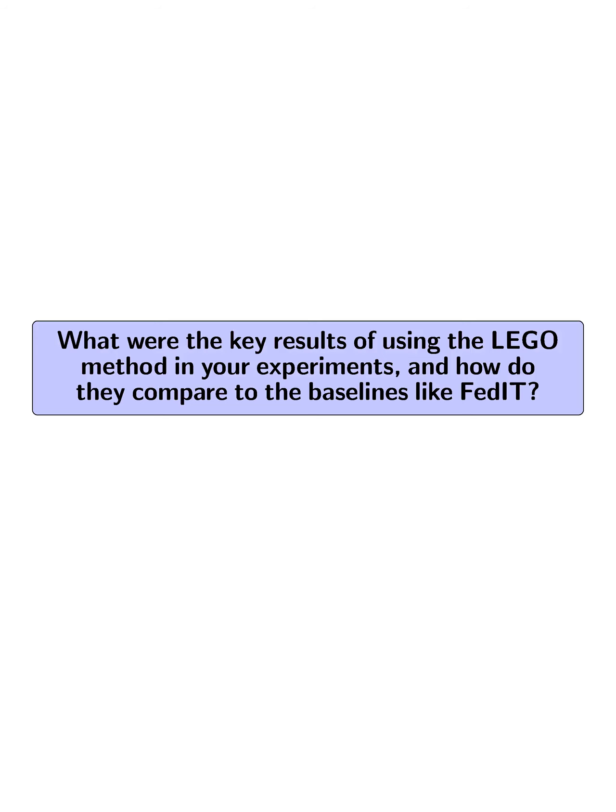What were the key results of using the LEGO method in your experiments, and how do they compare to the baselines like FETIT? The key results demonstrated significant improvements in both fine-tuning and inference speed, achieving up to 1.6x speed-up in inference and 1.4x in fine-tuning compared to 0% sparsity LLMs. LEGO outperformed the FETIT baseline in scenarios with task-dependent non-IID data, achieving an accuracy of 0.571 compared to FETIT's 0.563. Additionally, LEGO effectively facilitated knowledge transfer between differently-sized and shaped SLMs, allowing for the aggregation of models with varying sparsity levels while maintaining robust performance.